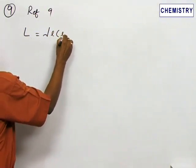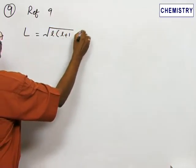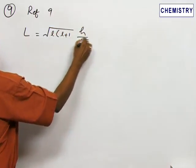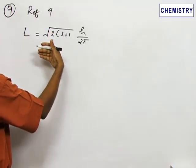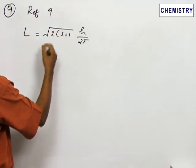Root of L into L plus 1 and H by 2π. Here L is the angular quantum number, that is the second quantum number, the angular momentum quantum number.